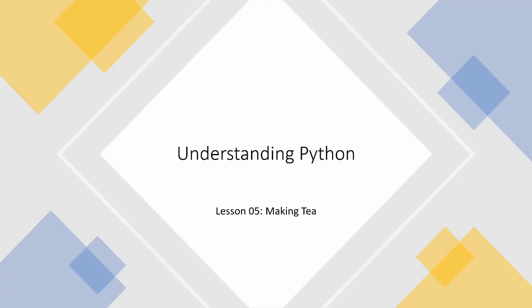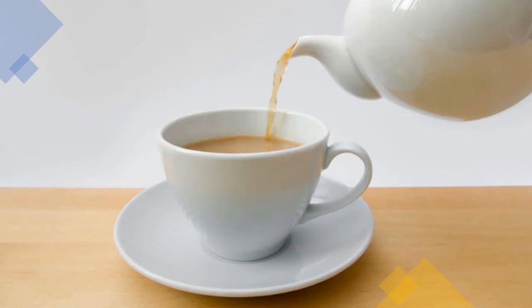Welcome back. Today we're going to be looking at functions, and the reason it's called making tea is because in my opinion making tea is the best way to imagine a function. When you're making tea you might decide whether to put milk in or how much sugar, and if you do exactly the same thing every single time you'll get the same cup of tea. In Python it's very similar: if you call a function with the same arguments or default settings then you'll always get the same thing.